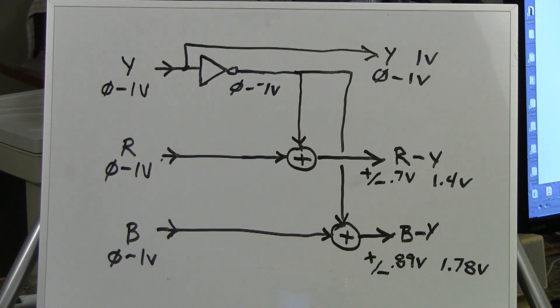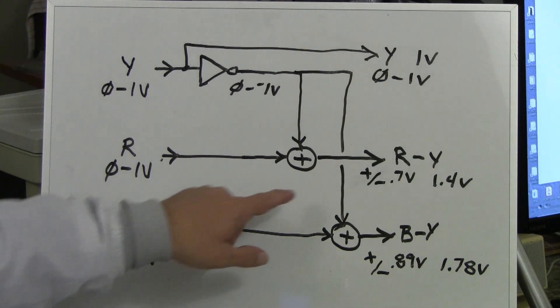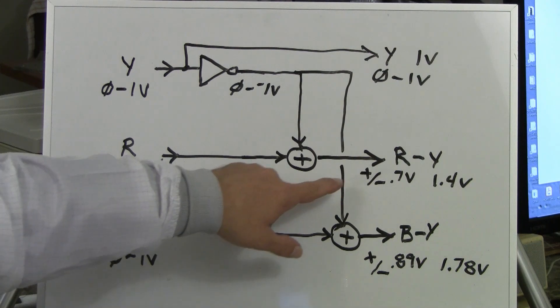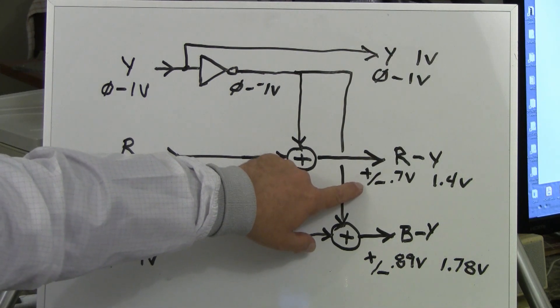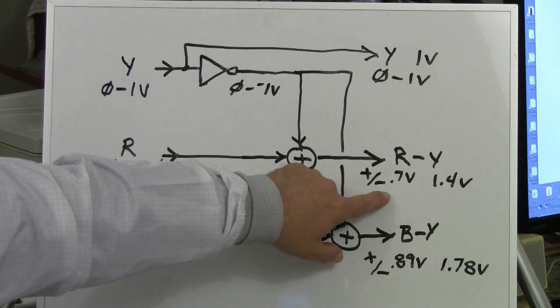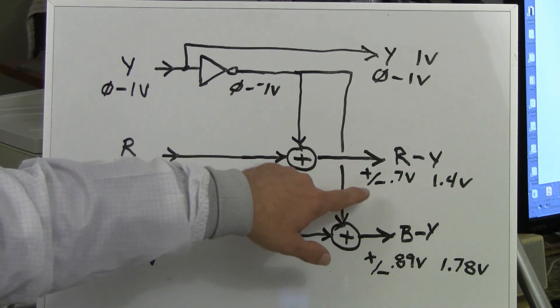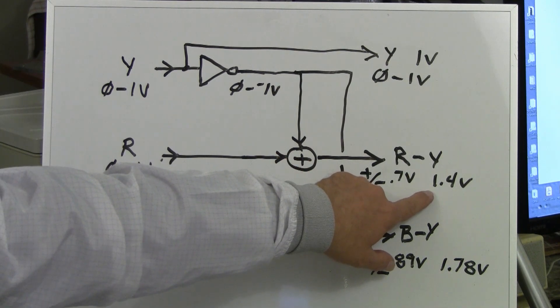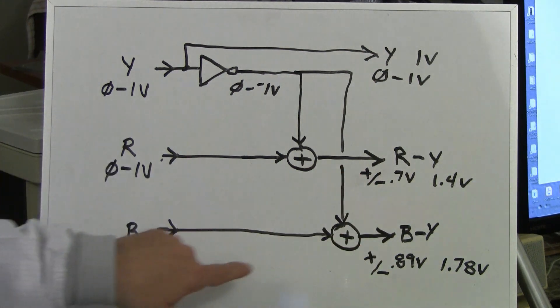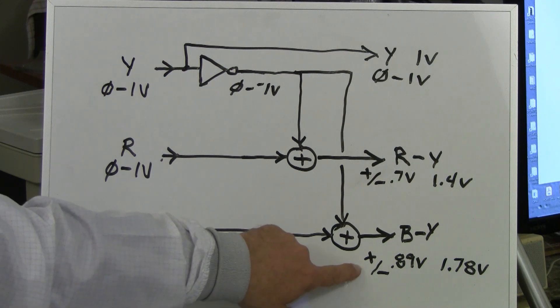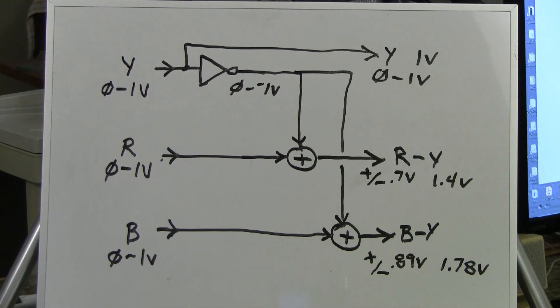Now, what has happened here is that the range of output voltage has changed. In the case of the R minus Y signal, it has a range of minus 0.7 volts to plus 0.7 volts, or it's plus and minus 0.7 volts for a total range of 1.4 volts. So it's gotten larger. The same has happened to the B minus Y, which has a range of plus and minus 0.89 volts for a total of 1.78 volts. This is normal. This is correct.